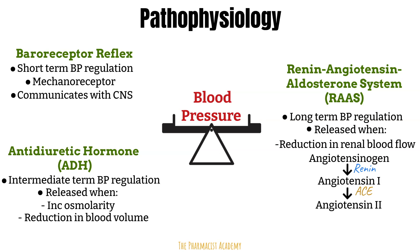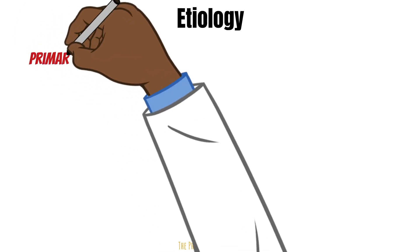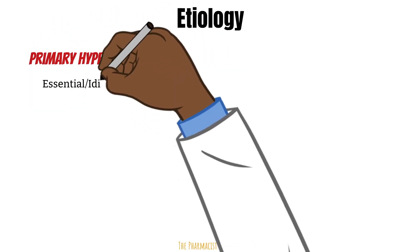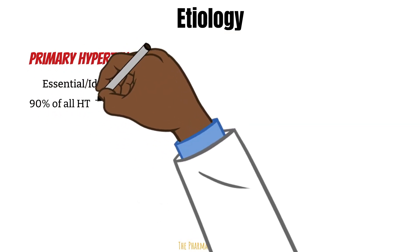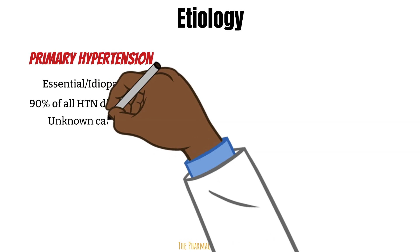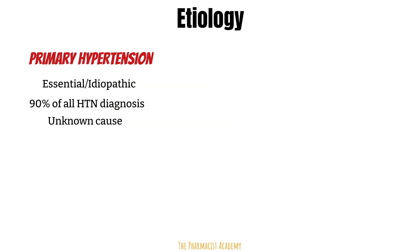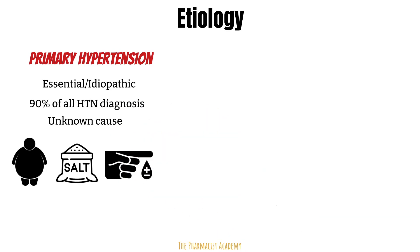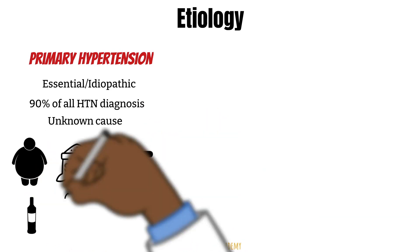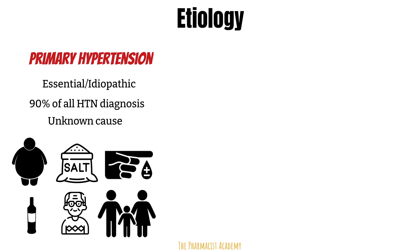Now, if the body has all these mechanisms in place to keep blood pressure balanced, what really causes them to break down so that someone has hypertension? In most cases of hypertension, we do not actually know what caused it. This is known as primary hypertension, or essential and idiopathic hypertension, and it occurs in about 90% of all hypertension cases. Although there are no identifiable causes, there are certain risk factors that can predispose a patient — such as obesity, high sodium intake, diabetes, heavy drinking, being elderly, or having a family history of hypertension.